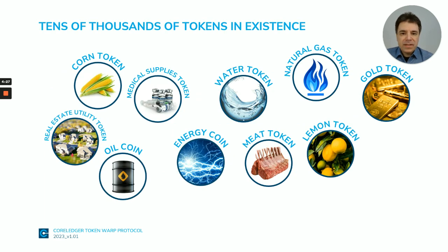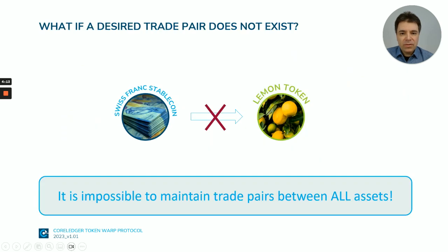Which problem exactly are we solving? In 2017 there was a boom of tokens and assets, and at the moment there are tens of thousands of different tokens in existence, and most of them are not really liquid. If you look for ways to trade some of them, and the trade involves at least one illiquid token, then you will most likely not find a trade pair, because maintaining an order book for illiquid trade pairs doesn't make much sense.